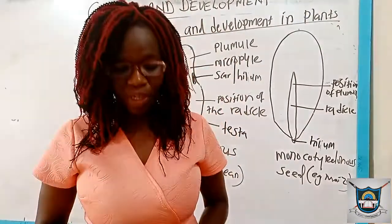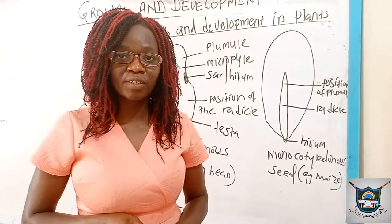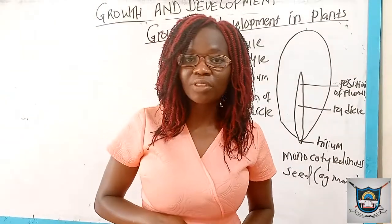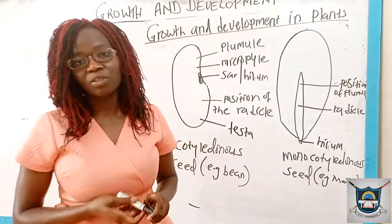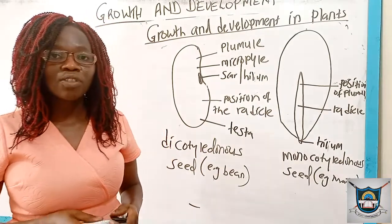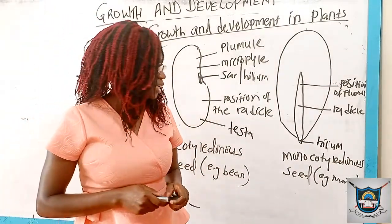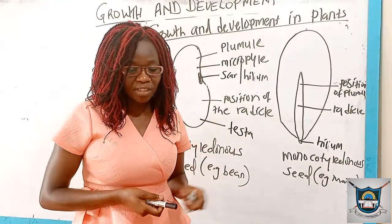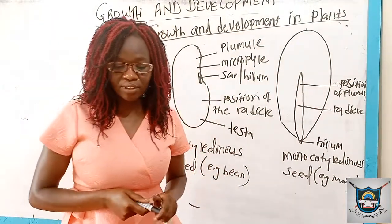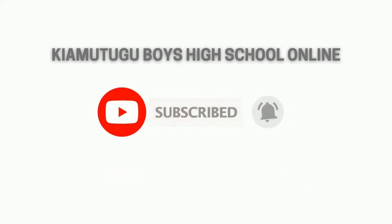So for today we have looked at the intermittent growth curve in the arthropods — for example, the locust or grasshopper. In those organisms, growth does not occur throughout their life; it only occurs when the exoskeleton is shed. We also looked at the structures of different seeds: the monocotyledonous seeds and the dicotyledonous seeds, and the features they contain. This marks the end of our lesson today. See you next time.